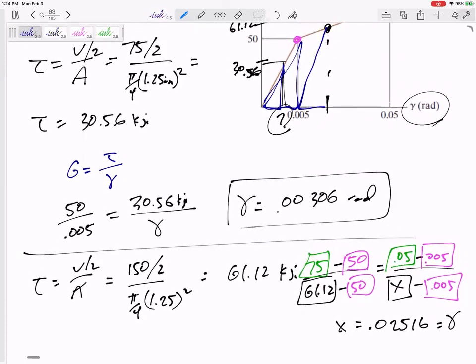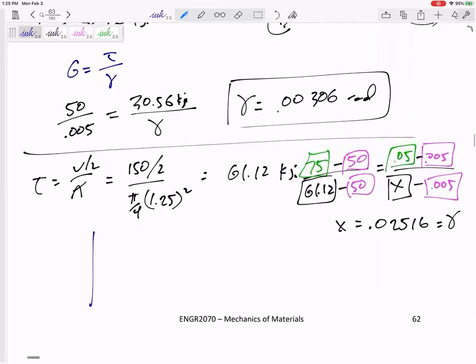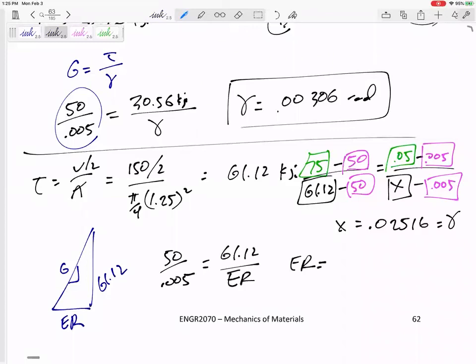I like to call this my unloading triangle. I'm going to redraw this unloading triangle. I know this height in the y direction was 61.12, and I know it unloads at the same slope of g, this 50 over 0.005. The base of my unloading triangle would be the recovery, the elastic recovery. The question doesn't ask me for elastic recovery, but that's the first thing I'm going to calculate, then I'll answer the question about permanent strain.